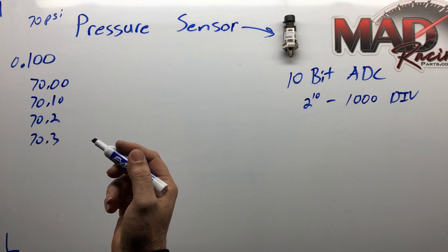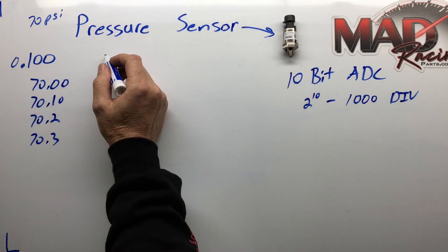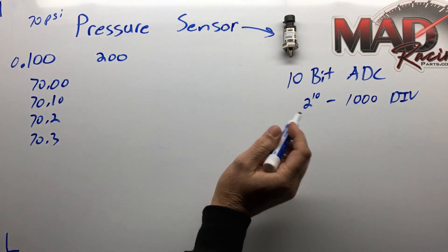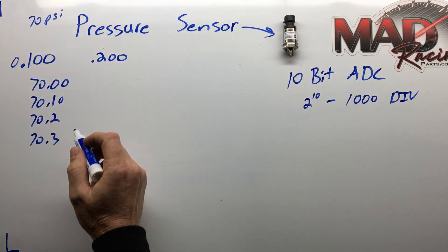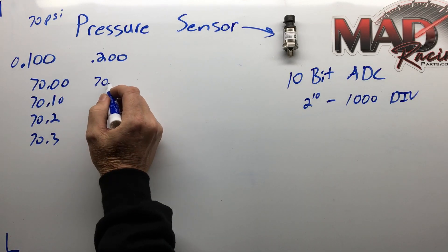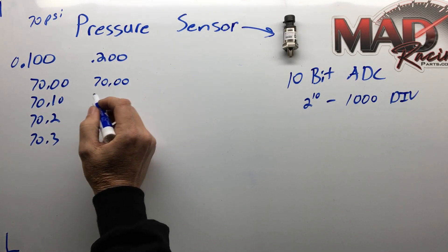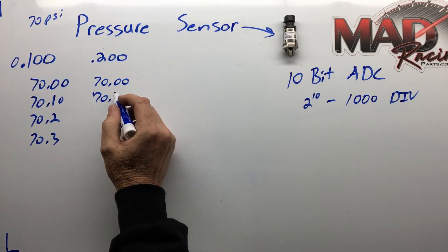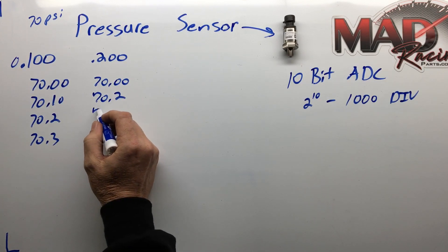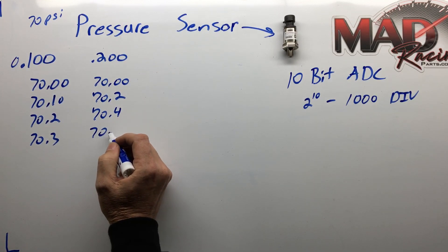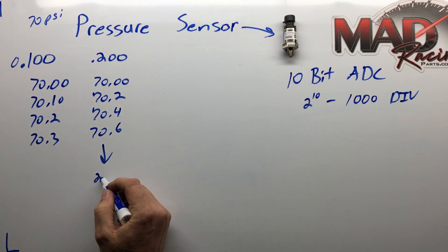What if we used a 200 pound sensor instead of a 100? Well, you just move the decimal point over, and now we have an engine that will report 70 pounds of pressure. If the pressure increases, it will report 70.2, 70.4, 70.6 and so forth all the way to 200.